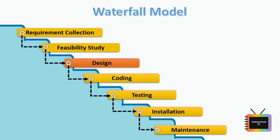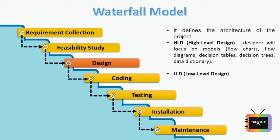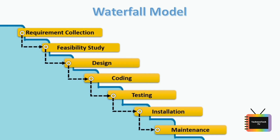The design phase basically defines the architecture of the project. It specifies the essential tools required, such as programming languages like Java, .NET, PHP, databases like Oracle and MySQL, and a combination of hardware and software. After that, designers prepare a blueprint of the application, which is divided into two parts: high-level design and low-level design. In high-level design, the designer focuses on components like UI design.